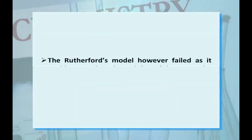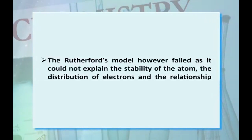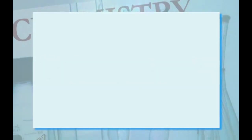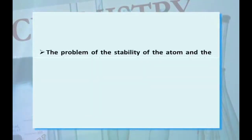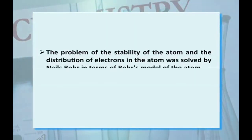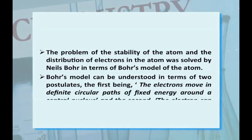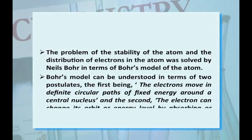The Rutherford model however failed as it could not explain the stability of atom, the distribution of electrons and the relationship between the atomic mass and atomic number, the number of protons. The problem of the stability of atom and the distribution of electrons in the atom was solved by Niels Bohr in terms of Bohr's atomic model. Bohr's model can be understood in terms of two postulates: the first being electrons move in definite circular paths of fixed energy around a central nucleus, and the second is the electrons can change its orbit or energy level by absorbing or releasing energy.